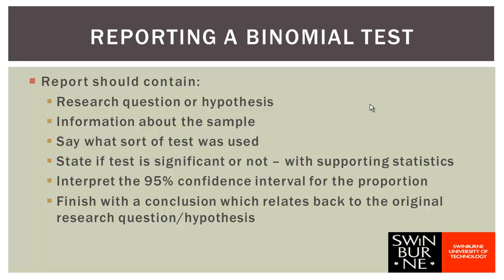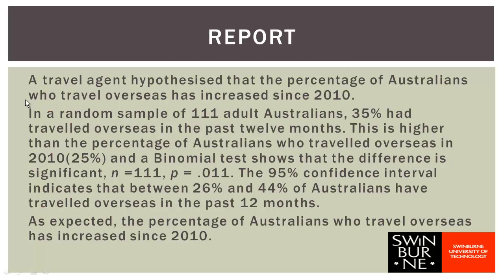Let's look at what the report would look like. We start with our introduction: 'A travel agent hypothesised that the percentage of Australians who travel overseas has increased since 2010.' Then we give information about the sample: 'In a random sample of 111 adult Australians, 35% had travelled overseas in the past 12 months.' We compare that to our reference: this is higher than the 25% who travelled overseas in 2010. Then: 'A binomial test shows that the difference is significant,' and we quote n = 111 and p = 0.011 as the supporting statistics.